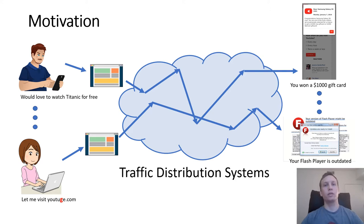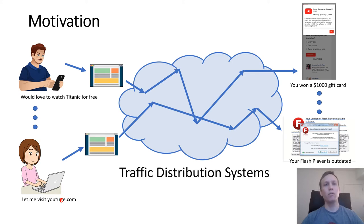Traffic distribution systems connect questionable and malicious sites desiring very specific user traffic with sites attracting these users. For example, phone users who want to watch movies for free are sent to a variety of disruptive and scam pages. The goal of our work is to provide a better understanding of how these traffic distribution systems operate.